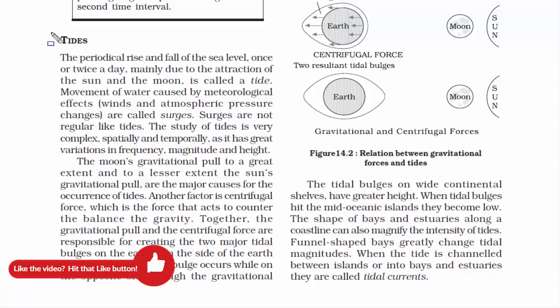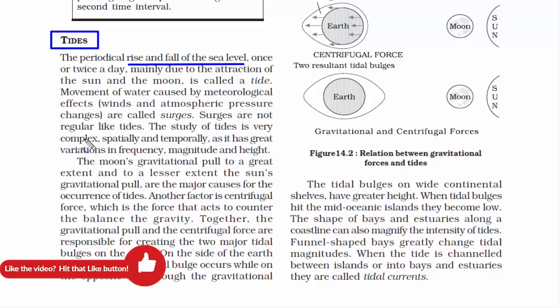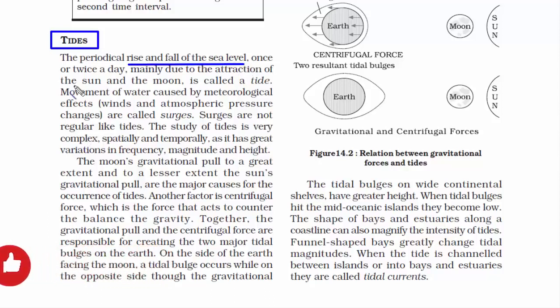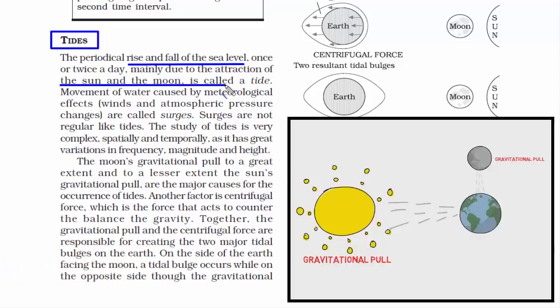The next topic is tides. A tide is basically a rise and fall of sea level. It occurs once or twice in a day, and the reason behind it is the gravitational attraction of the sun and the moon.